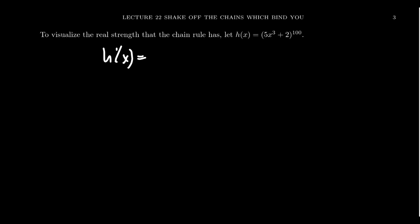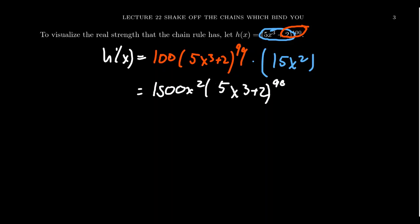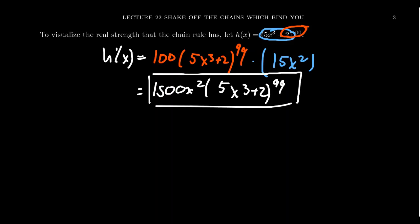With h(x) = (5x³ + 2)^100, we still have the inner function 5x³ + 2 and the outer power function, just with a bigger power. The outer derivative is 100(5x³ + 2)^99 by the power rule, and the inner derivative is still 15x². Multiplying 100 by 15 gives 1500, so the derivative is 1500x²(5x³ + 2)^99 — already factored. The chain rule is definitely king on a question like this.